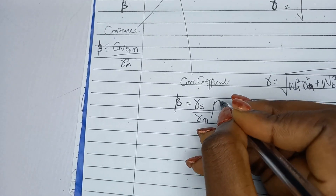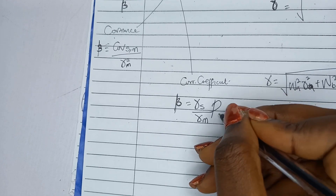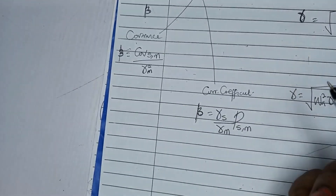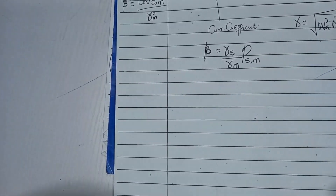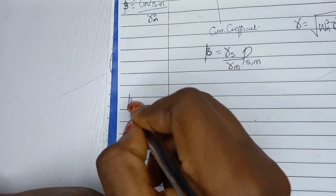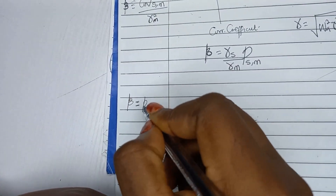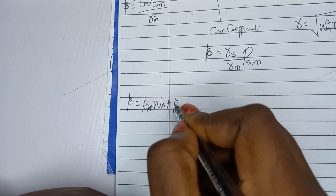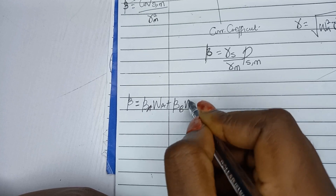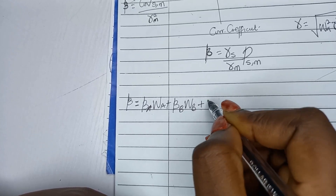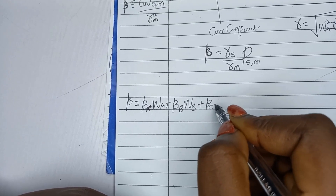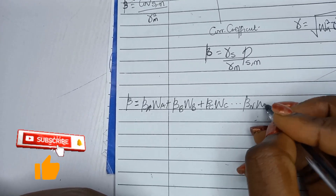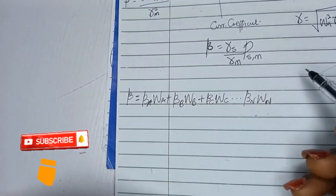Using the correlation coefficient formula, systematic risk equals the risk of the security over the risk of the market, multiplied by the correlation coefficient between the security and the market. When you have many assets in a portfolio, the portfolio beta is the sum of each asset's beta multiplied by its weight in the portfolio.